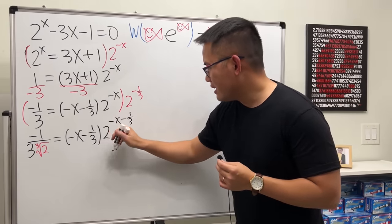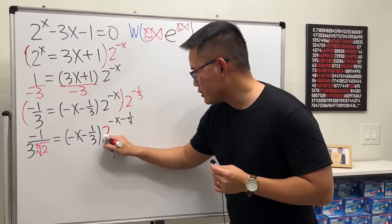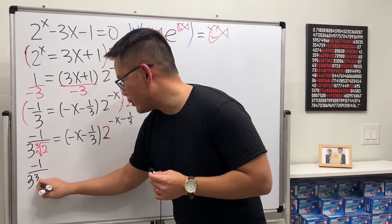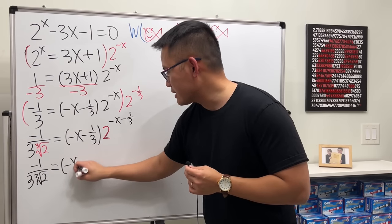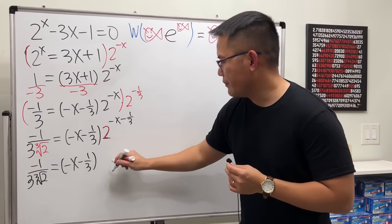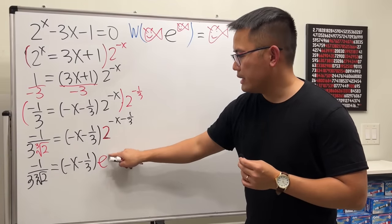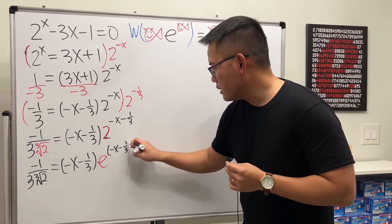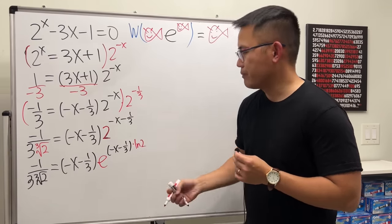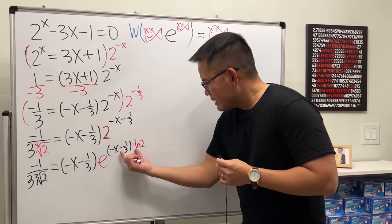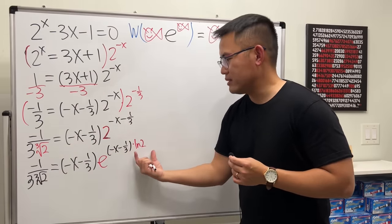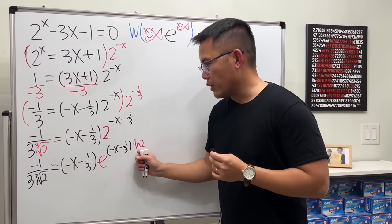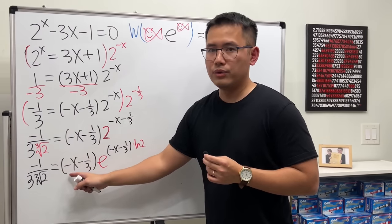To fix that, write 2 as e^(ln 2). So the right side becomes (−x − 1/3) · e^((−x − 1/3) · ln 2). The left side stays as −1/3 over the cube root of 2. Now this is almost perfectly set up — except the left side also needs to be multiplied by ln 2 to match the coefficient on the right.